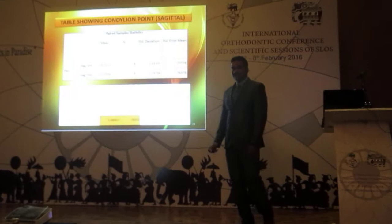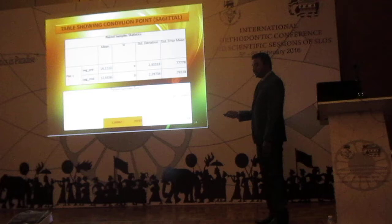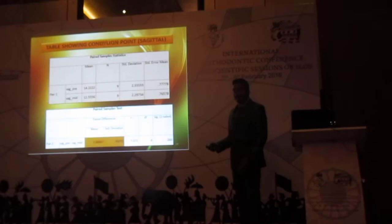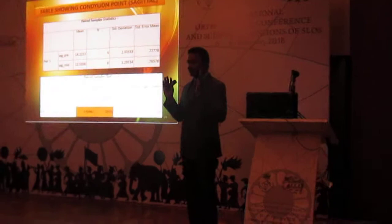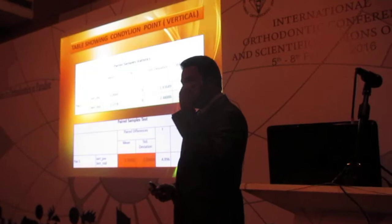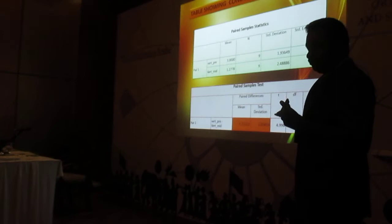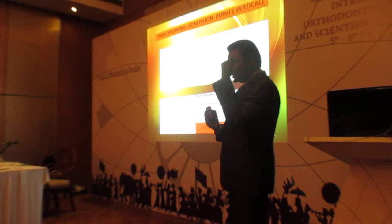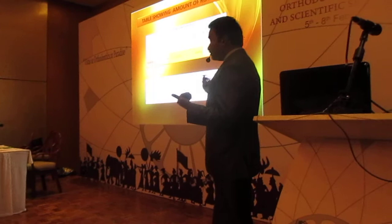The results were interesting. The condyle moved approximately 1.6 mm in the anterior direction, with a standard deviation of 0.7, meaning roughly 2 to 2.5 mm of anterior movement of the condyle was observed. Regarding vertical movement, the condyle descended downward by about 2.7 mm, with 1 mm standard deviation — so approximately 2.5 to 2.7 mm of vertical condylar descent was seen.